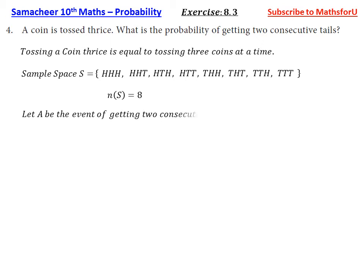Let A be the event of getting two consecutive tails. Therefore, A is equal to HTT, TTH, TTT. Fine. So n of A, what we can get? Three.